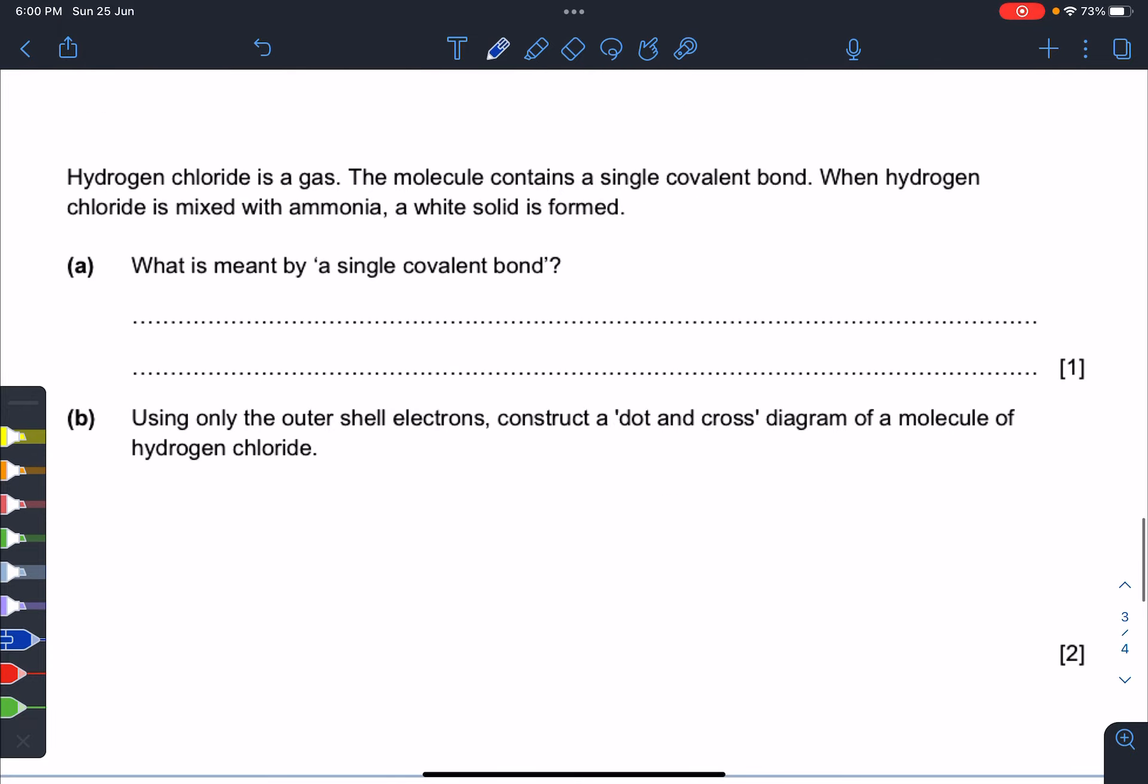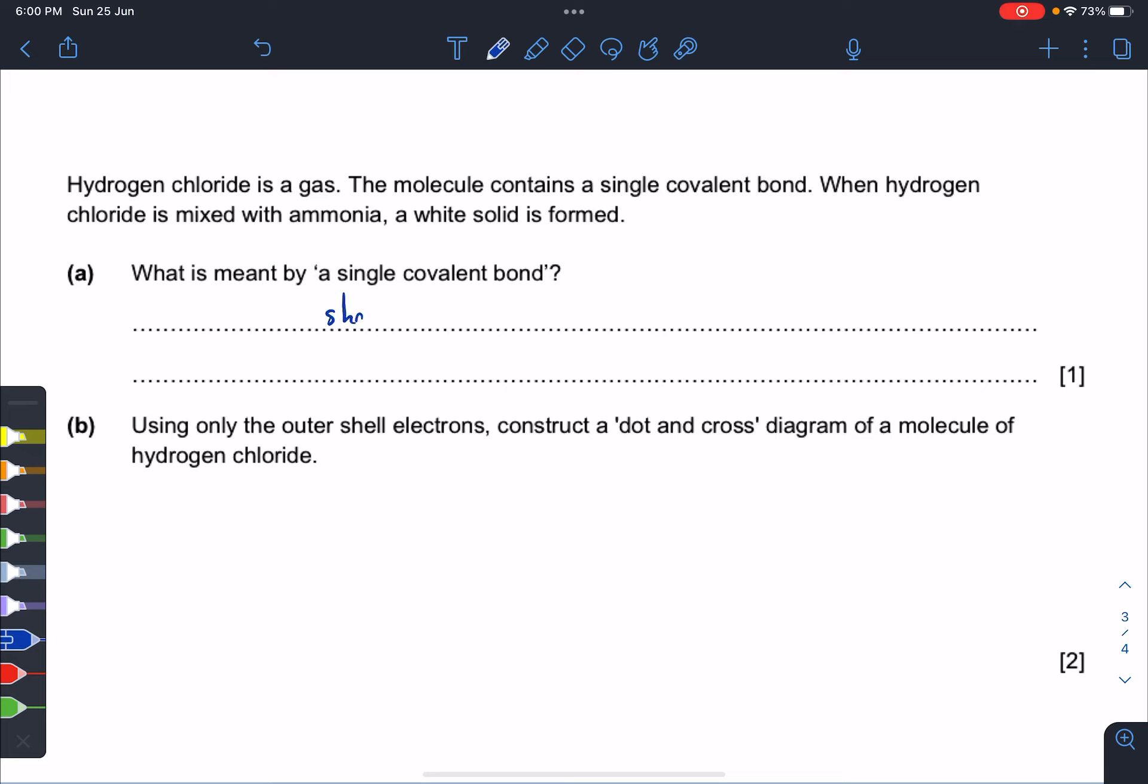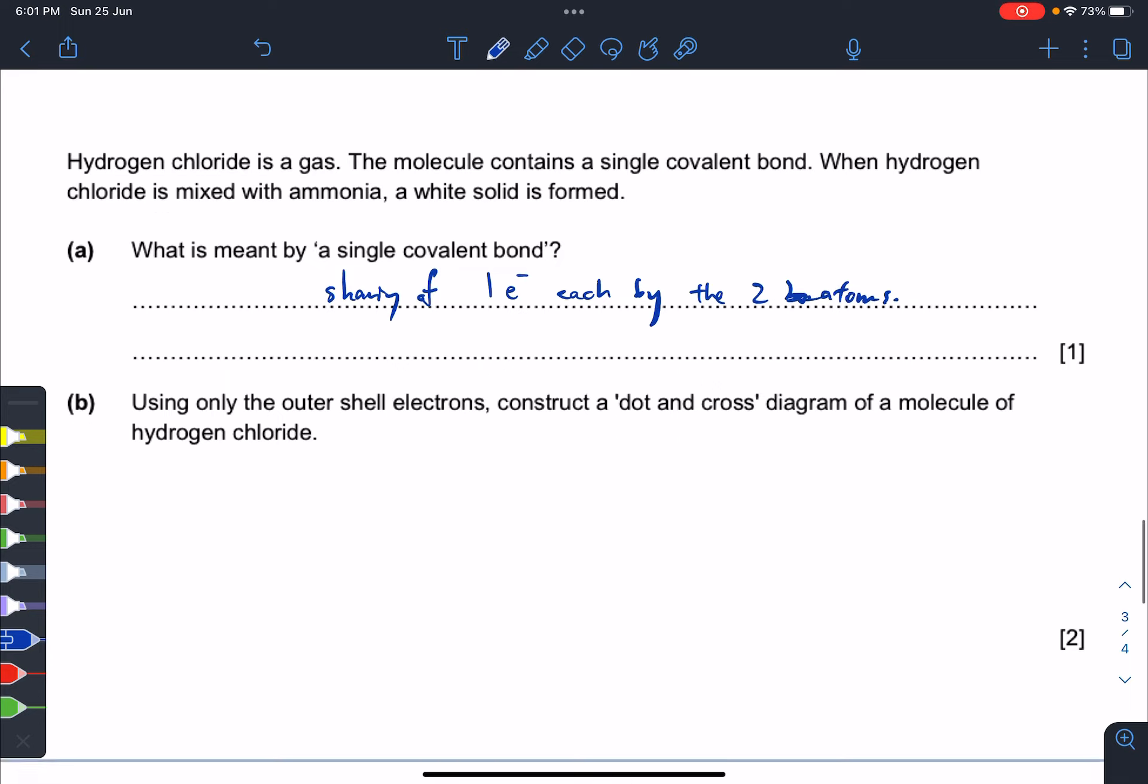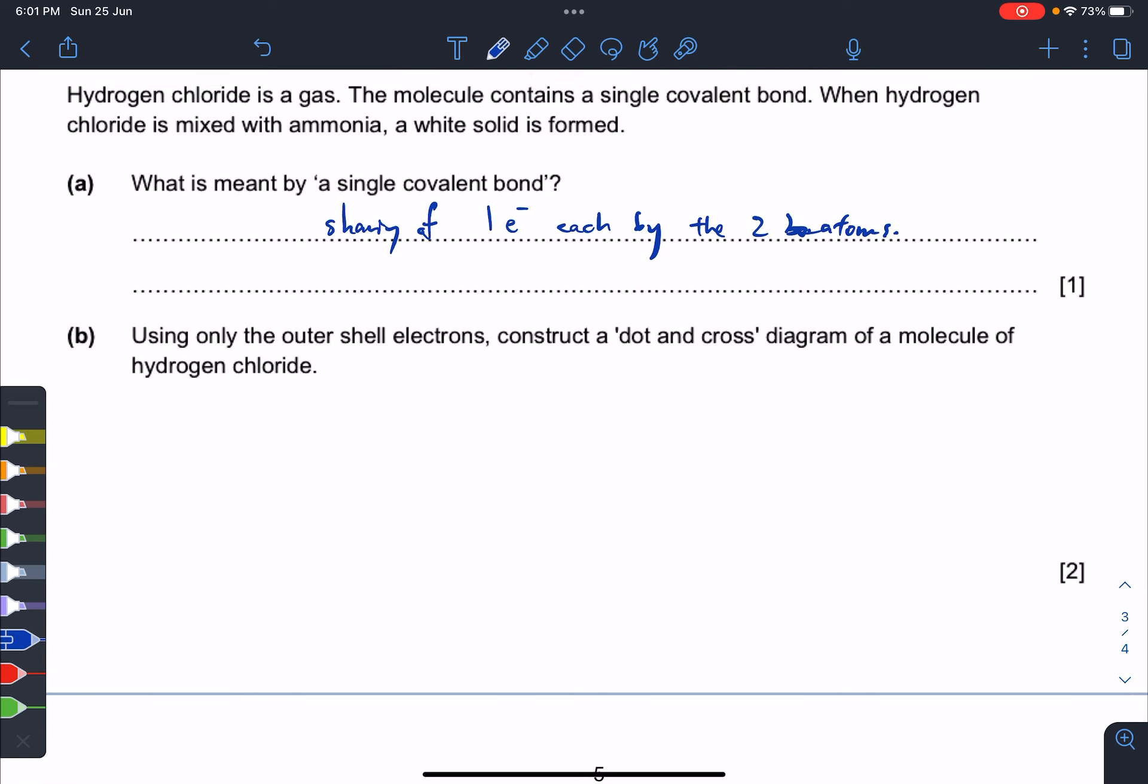Next one: what's a single covalent bond? It just means sharing of one electron each by the two atoms. Let's say H and Cl: H will take one, Cl will take one, and they will share this one electron each. You're supposed to draw your dot and cross. First, figure out ionic or covalent—this is covalent. H is group 1, Cl is group 17 with seven valence. If you have seven, you only need one more. Then you may think you're done, but don't forget the last step: make sure you show all the valence electrons. Seven—I still got six more to go. Then that's correct.